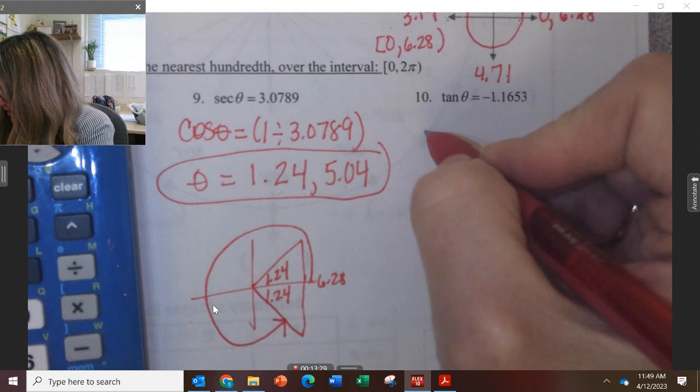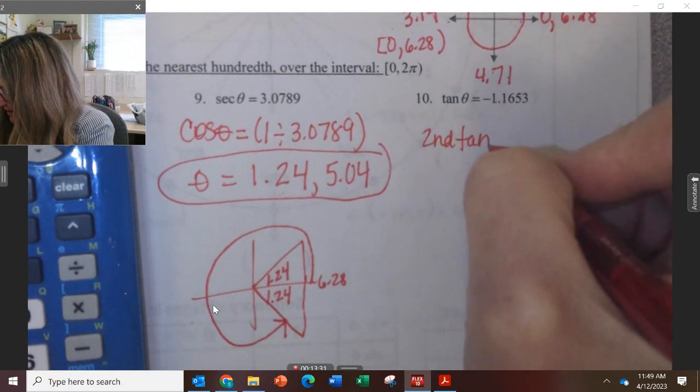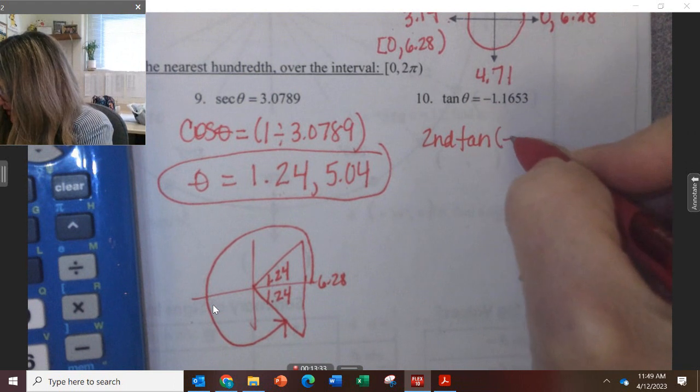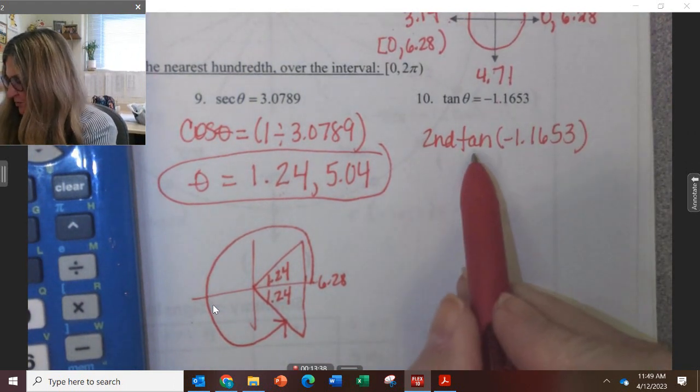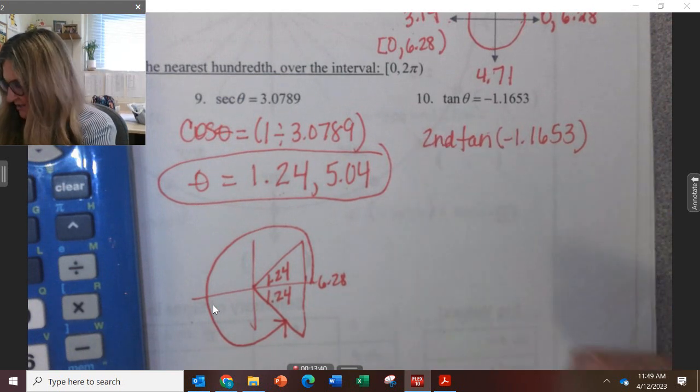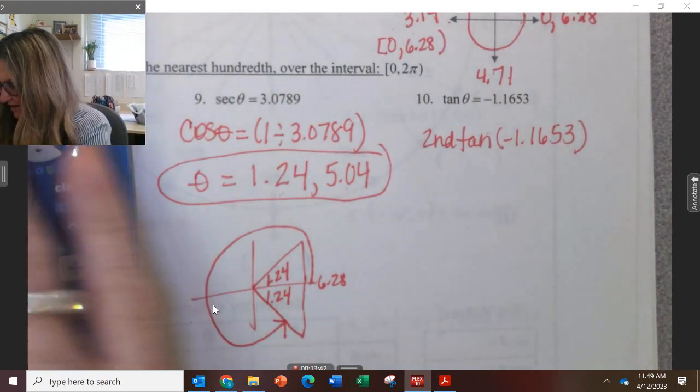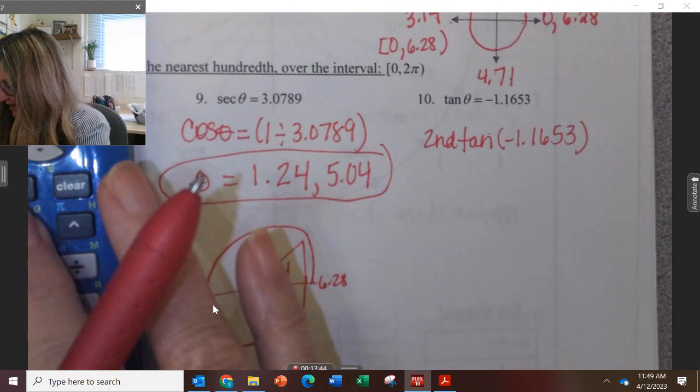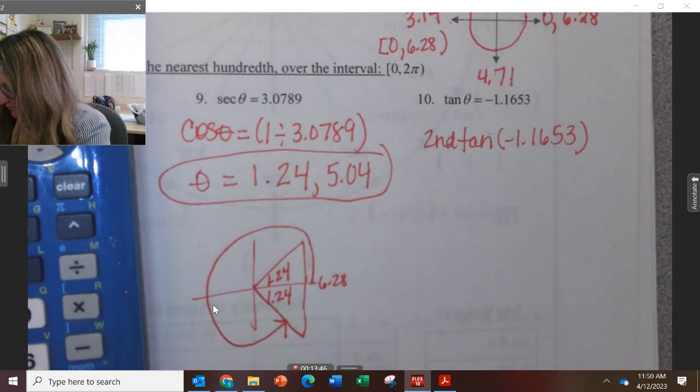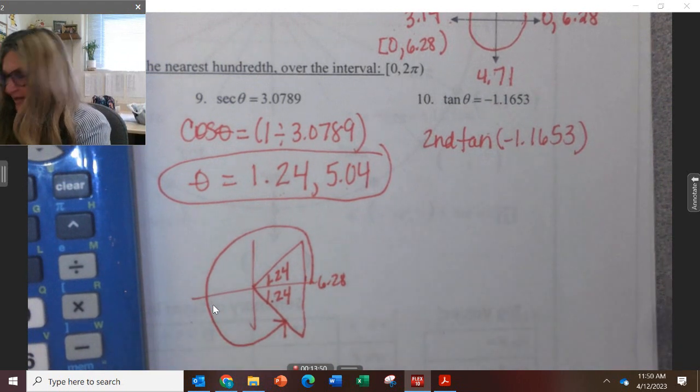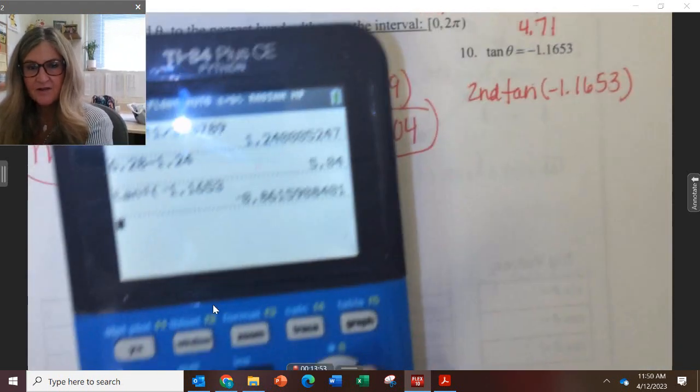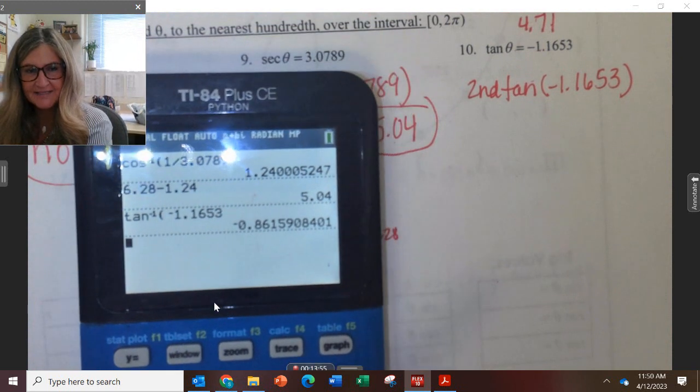Last one here. Second tan, I don't have to flip it, of negative 1.1653. You can also put tan to the negative 1, arc tan, all of it means the same thing. Second tan, and I get this answer, negative 0.86.